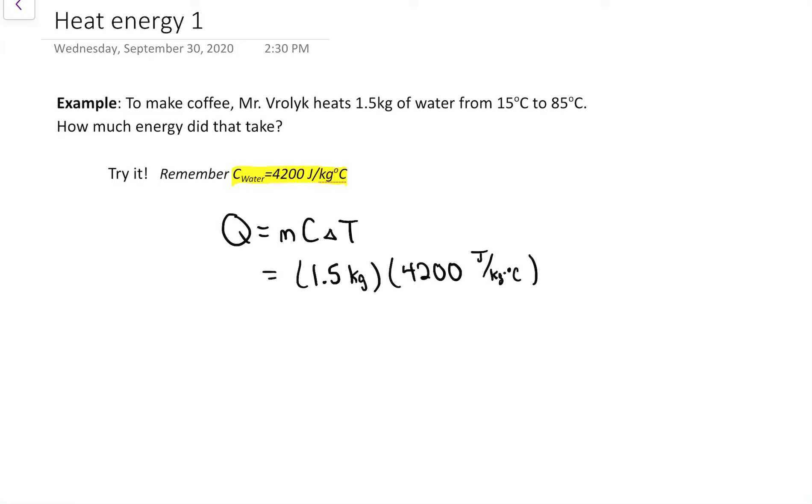It's got those funny units - joules per kilogram degree Celsius. Change in temperature, whenever we look at a change, it's always the second minus the first. So if we go from 15 to 85, the change in temperature is going to be 85 minus 50, or 60.